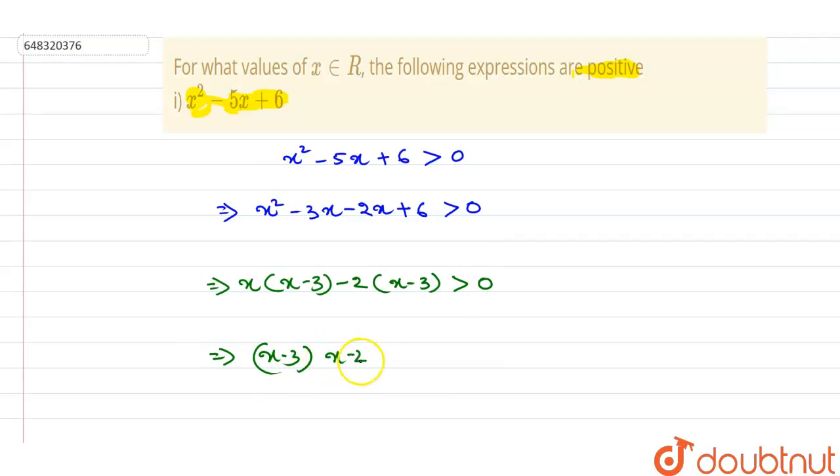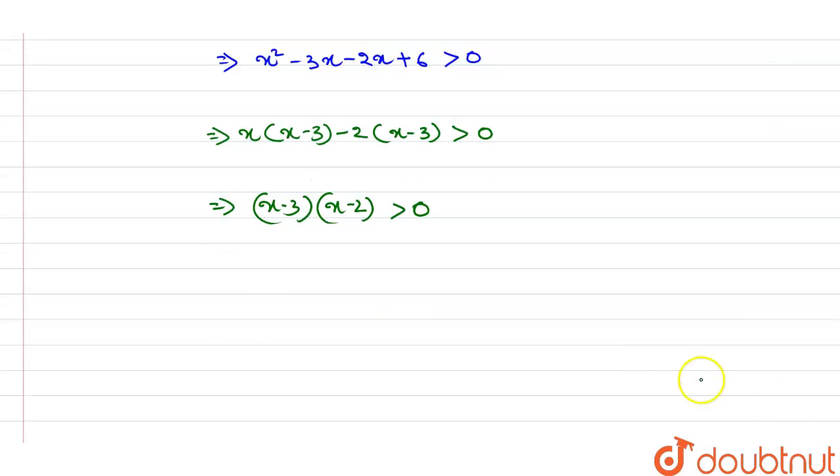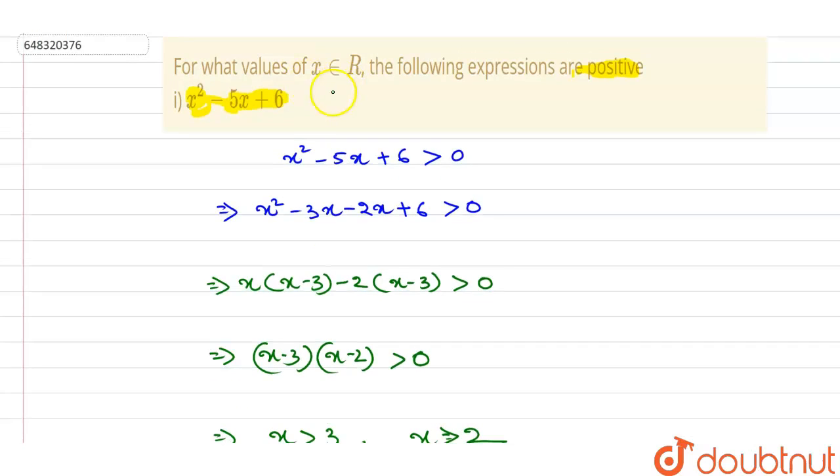That implies where x is greater than 3 and x is greater than 2. That means at the values 3 and 2, the quadratic equation are zero. But the question is find where the expression is positive.